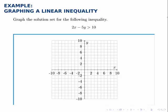Graph the solution set for the following inequality: 2x minus 5y is greater than 10. To graph the solution set for an inequality, we start by graphing the line, in this case 2x minus 5y equals 10, simply replacing the inequality with an equal sign.